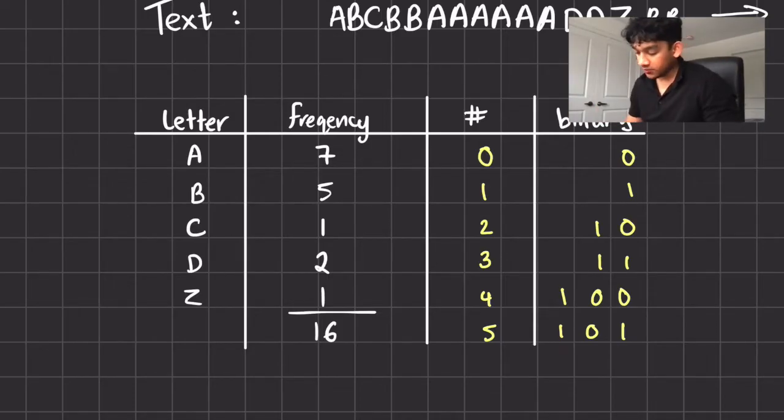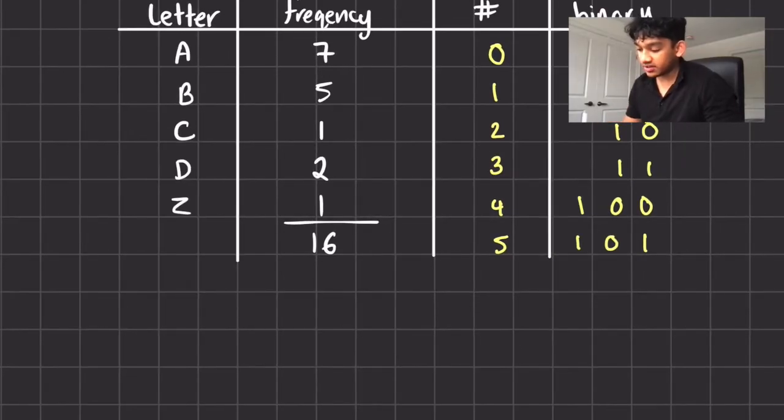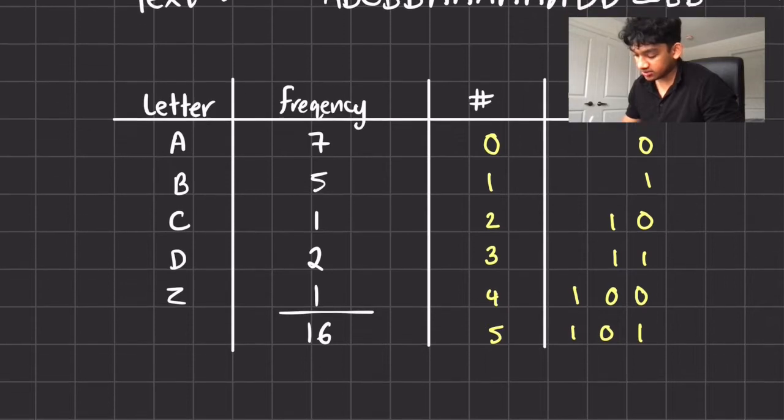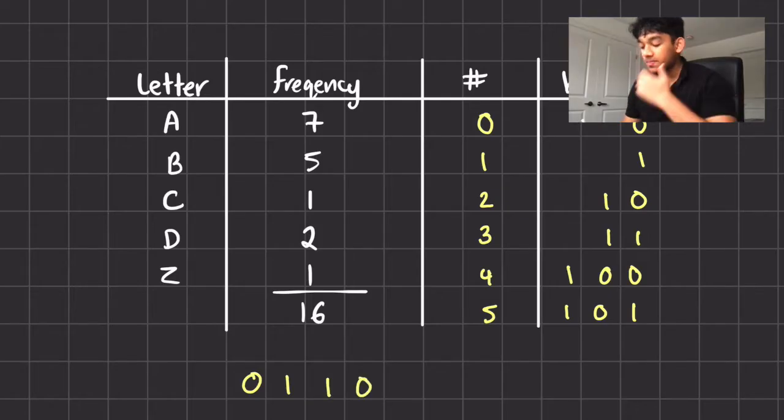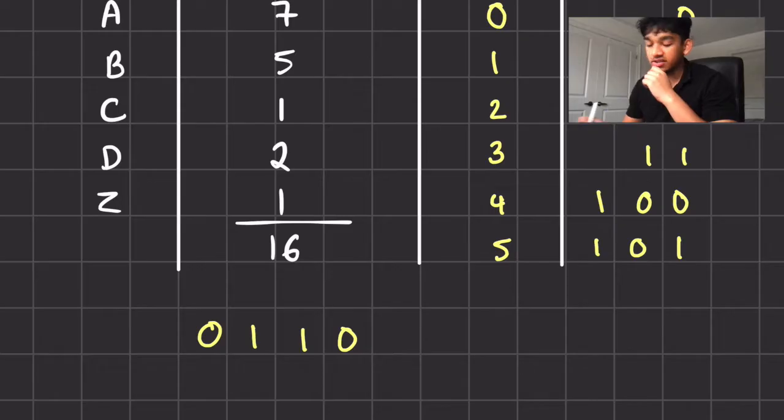So if we actually try to write this all together right now, what we're gonna get is, so let's try it, A, B, C. Those are the first three letters. So let's try A, B, C. So the issue that we have now is that this can be interpreted in many different ways. It can be A, B, C for sure.